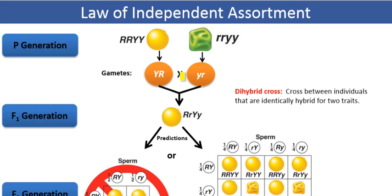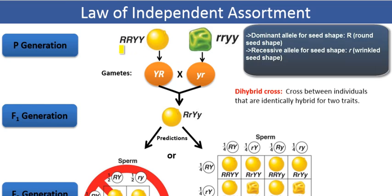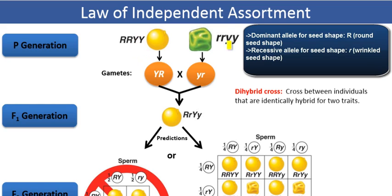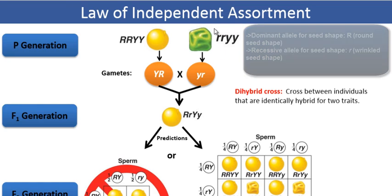Likewise, the seed shape character is represented by a capital R, as you can see. Capital R represents the round seed shape, which is the dominant allele. And the small r represents the wrinkled seed shape, which is the recessive allele.